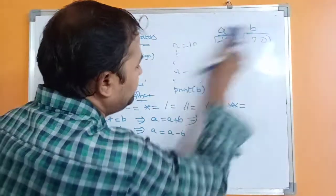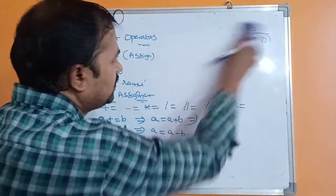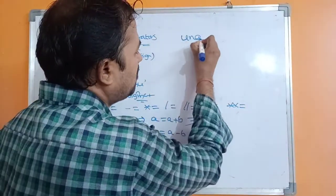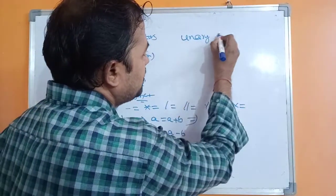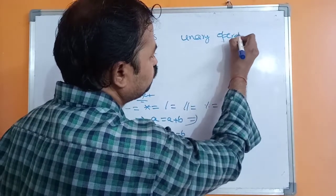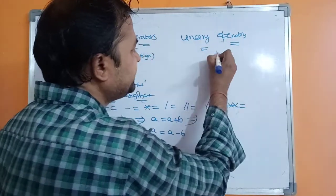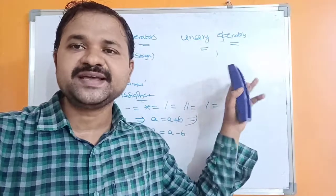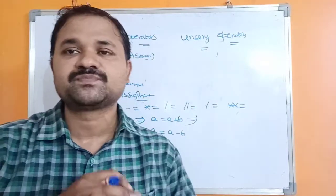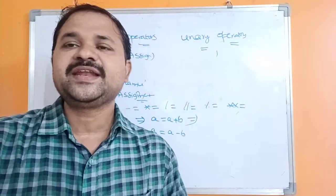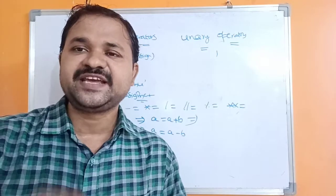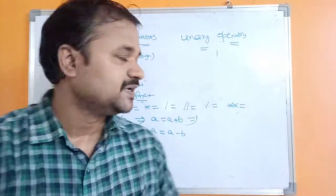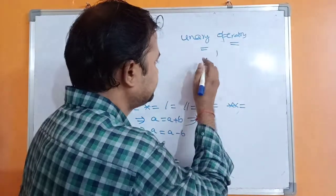Now let's see about unary operators. 'Unary' means one. Unary operators are useful in order to perform an operation on a single operand. Mainly, by using a unary operator, we can change the sign of an operand.